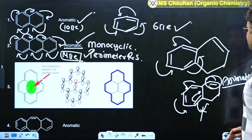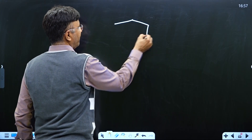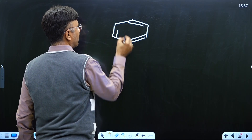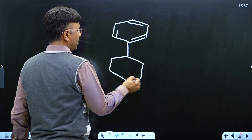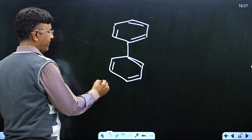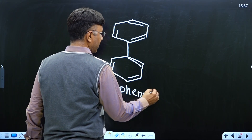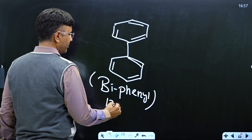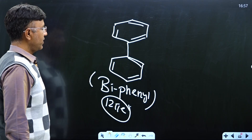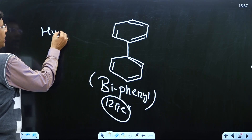Now let me explain one more example — the very famous example of biphenyl. How many π electrons does biphenyl have? 12 π electrons. Now, in order to apply Hückel rule, what are the conditions?